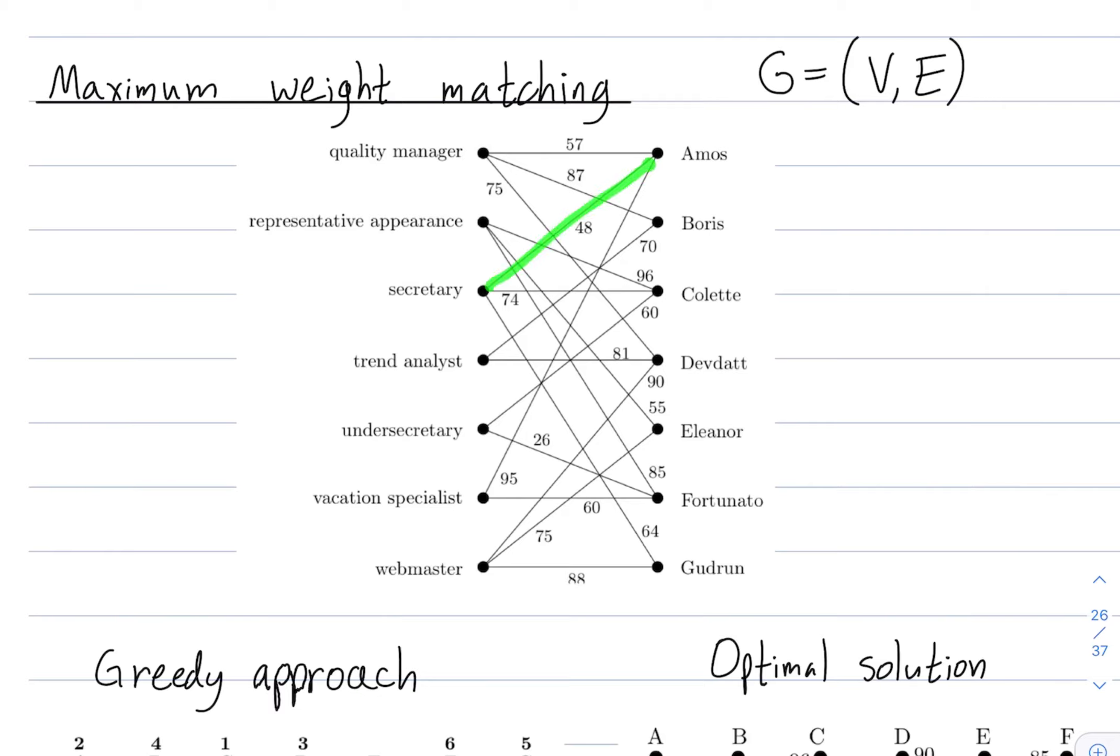Each edge goes from a person to a role. And the edge is equipped with a label. And the label is how effective, it's a measure of how effective the person is in that role. So, Amos' effectiveness as a secretary would be 48. Amos does not have an edge to the webmaster position, because maybe his effectiveness there would be zero.